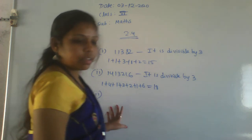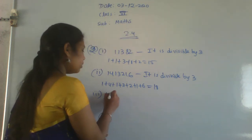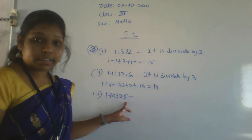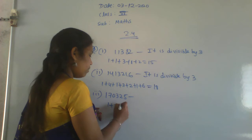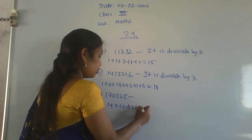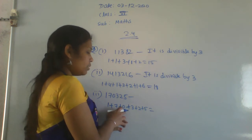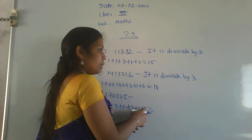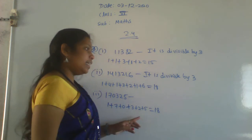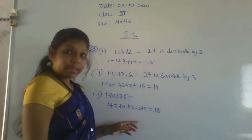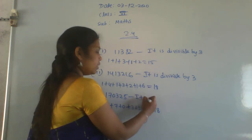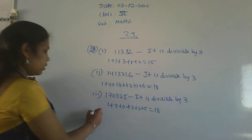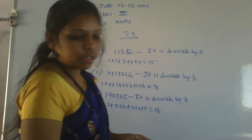Third problem is 170325. Take the digit sum: 1+7+0+3+2+5. That is 1+7=8, 8+0=8, 8+3=11, 11+2=13, 13+5=18. Whether 18 is divisible by 3? Yes. Therefore it is divisible by 3.